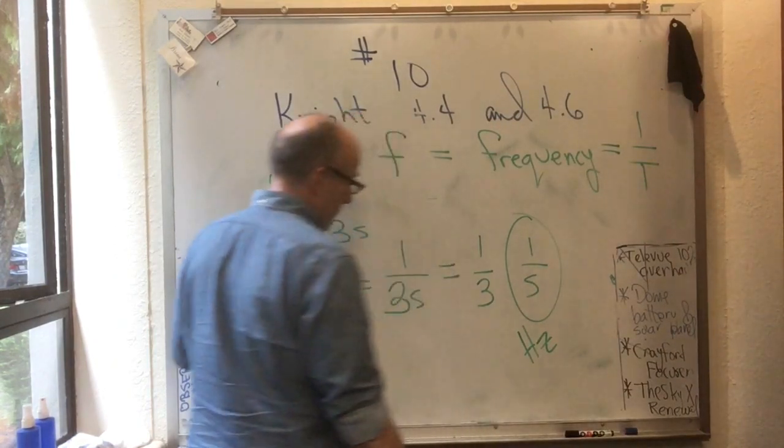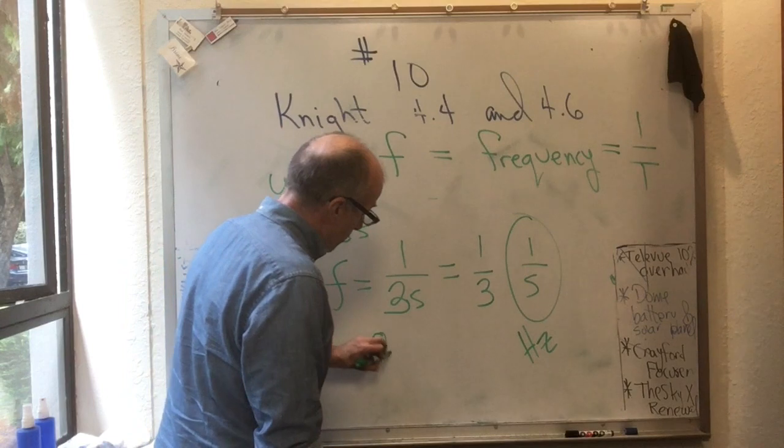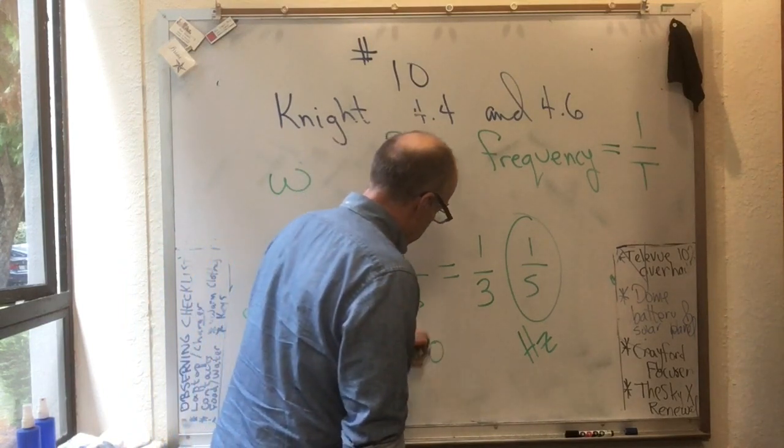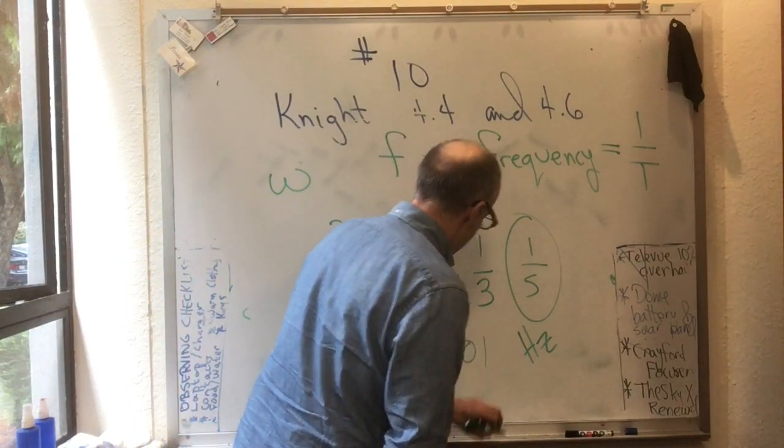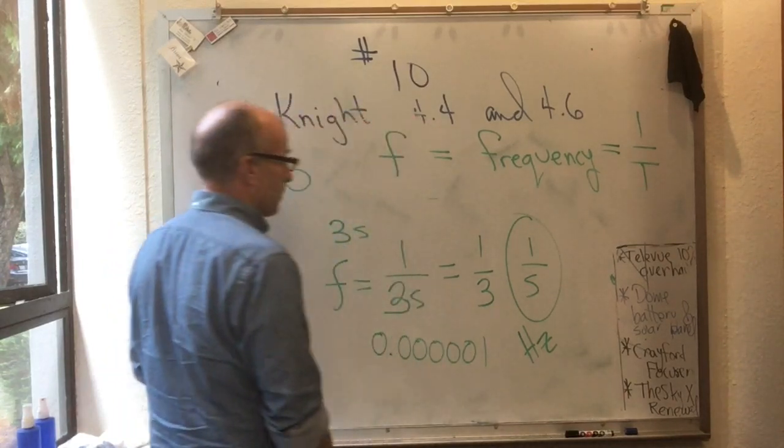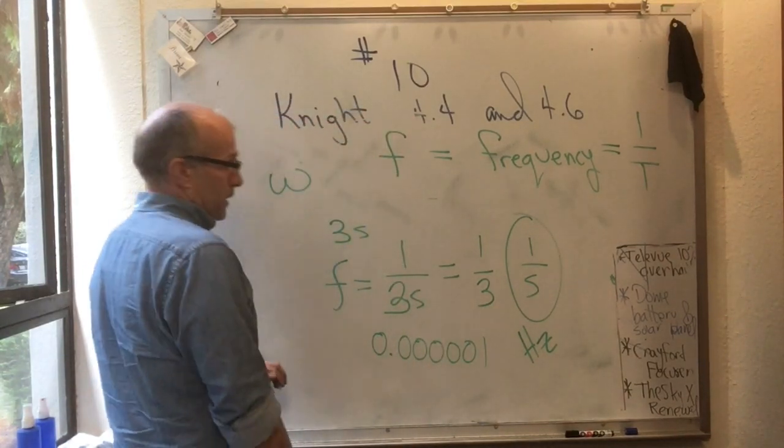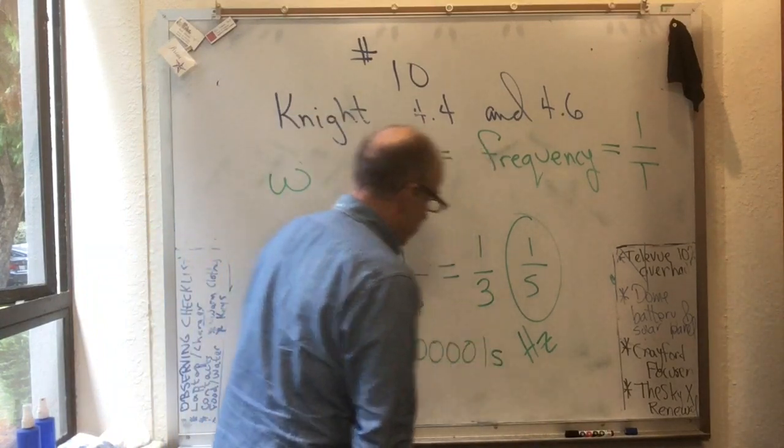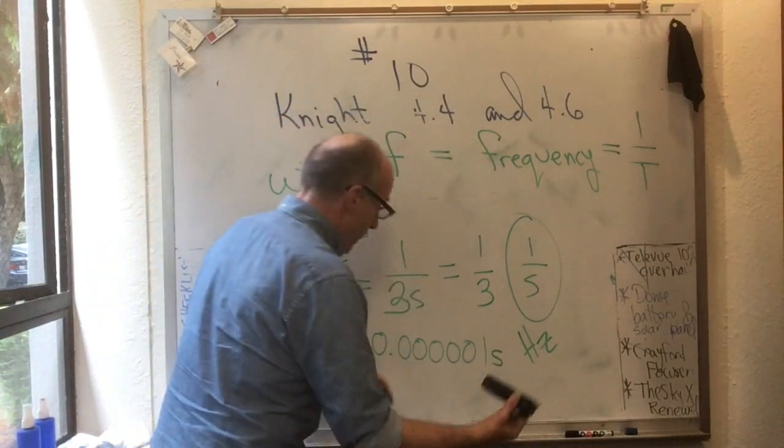And if something takes, say, maybe 0.0000001, that's 1, 2, 3, 4, 5 zeros and then a 1 of a second to happen once, then the frequency f is equal to 1 over 0.0000001 seconds.